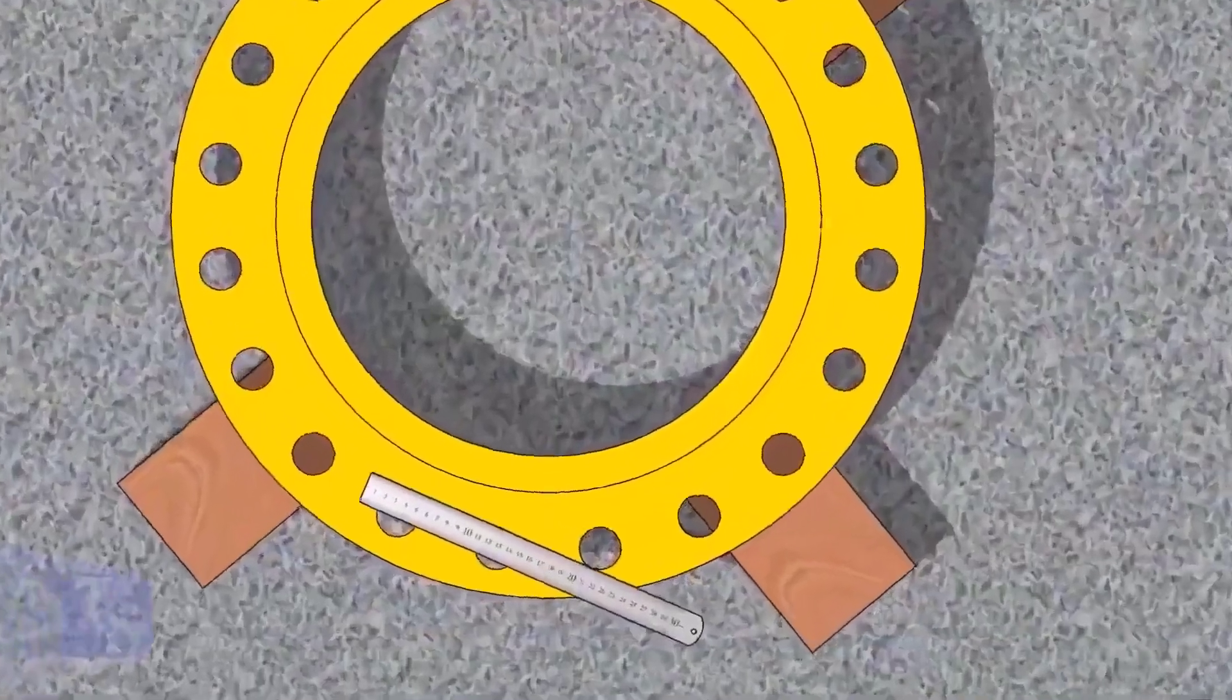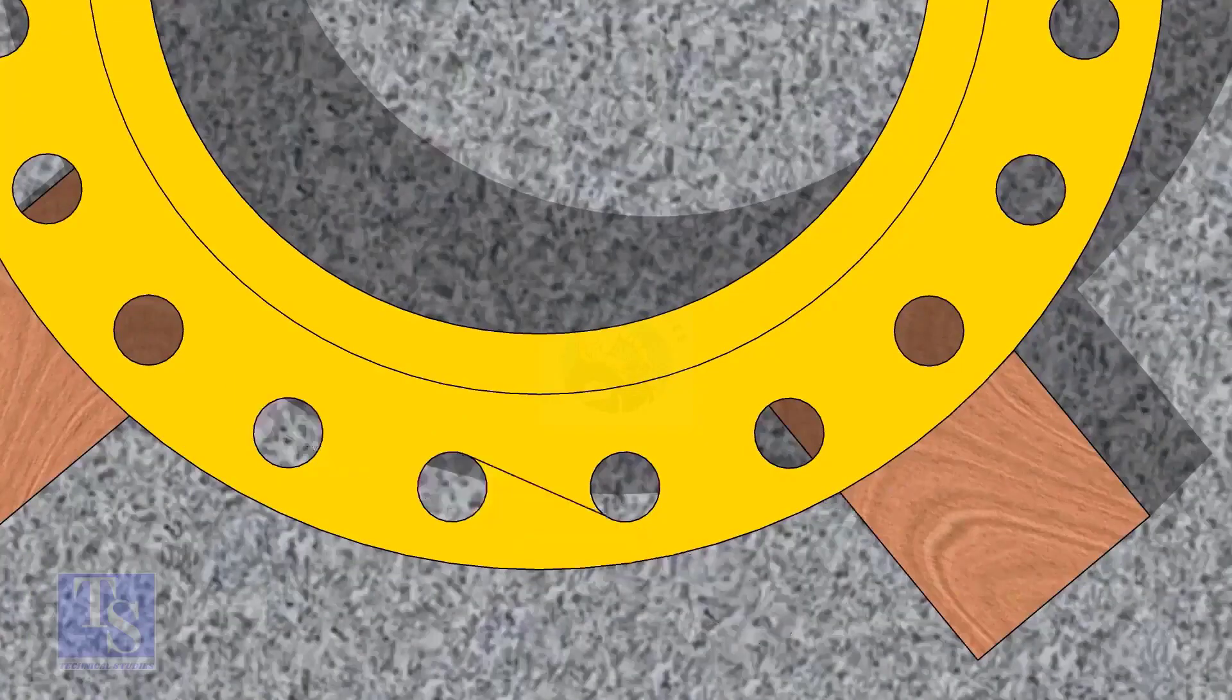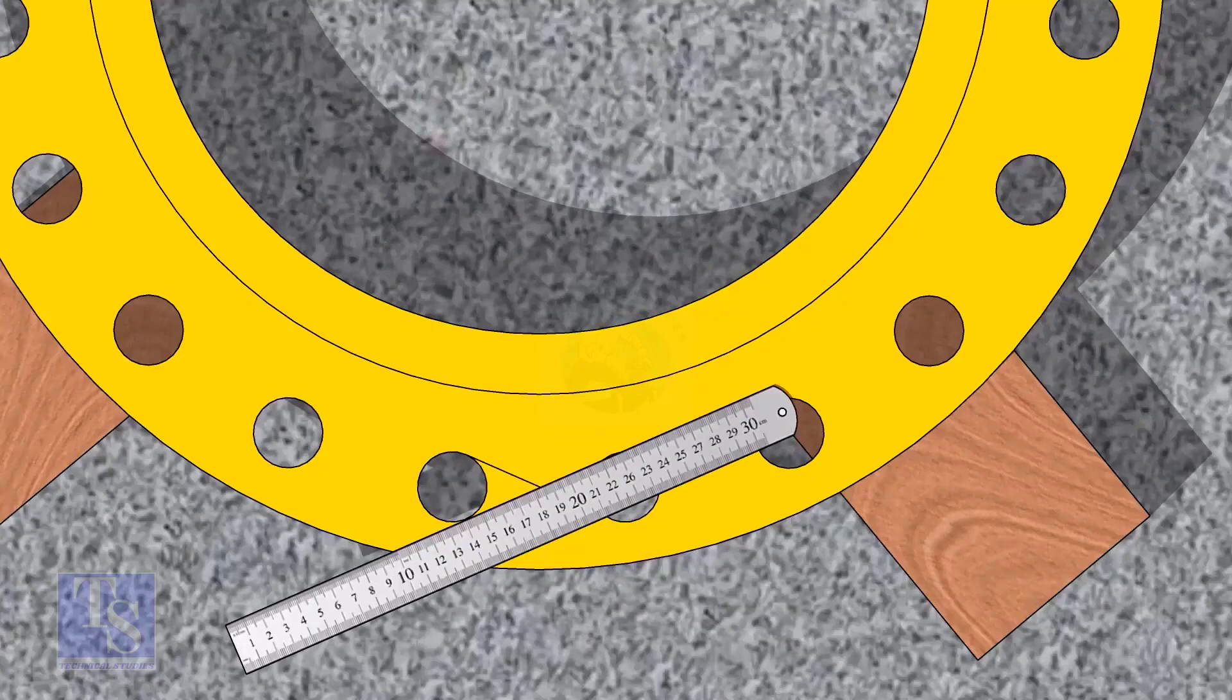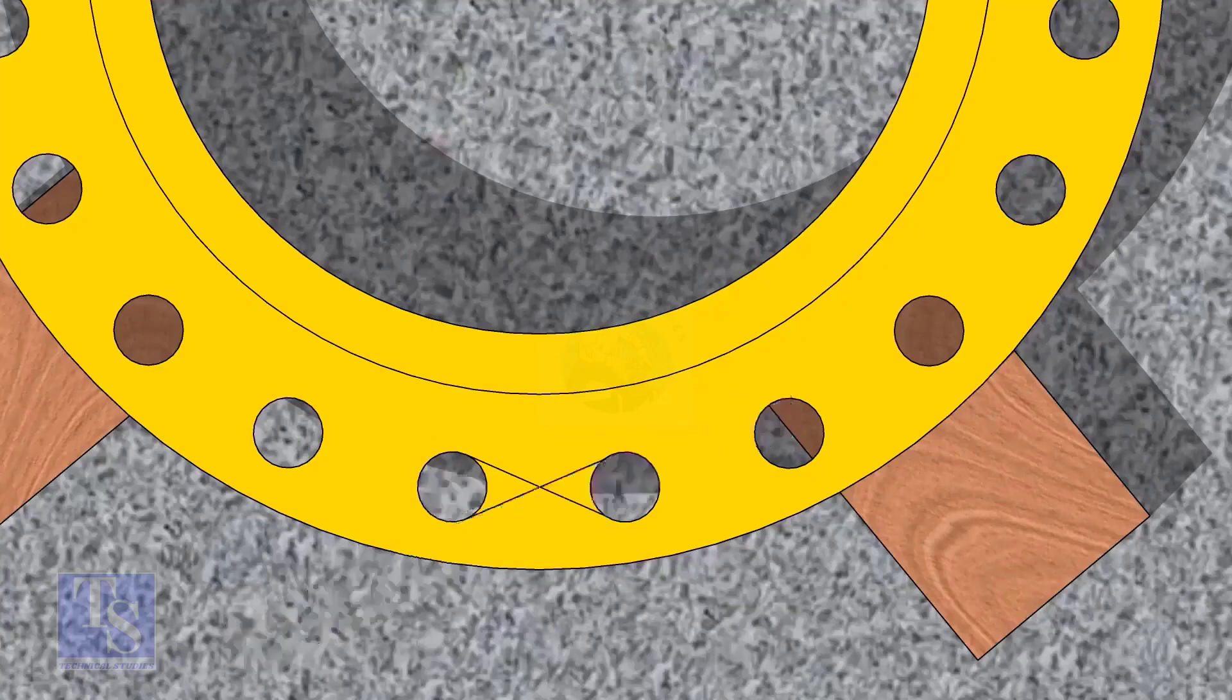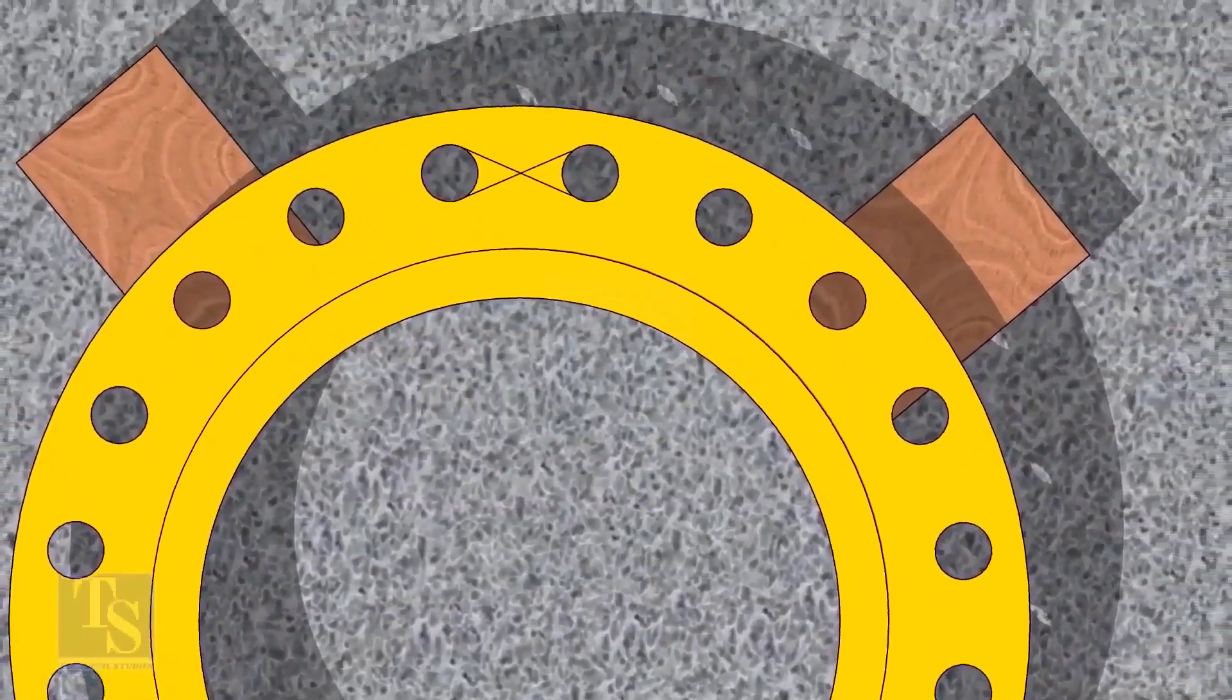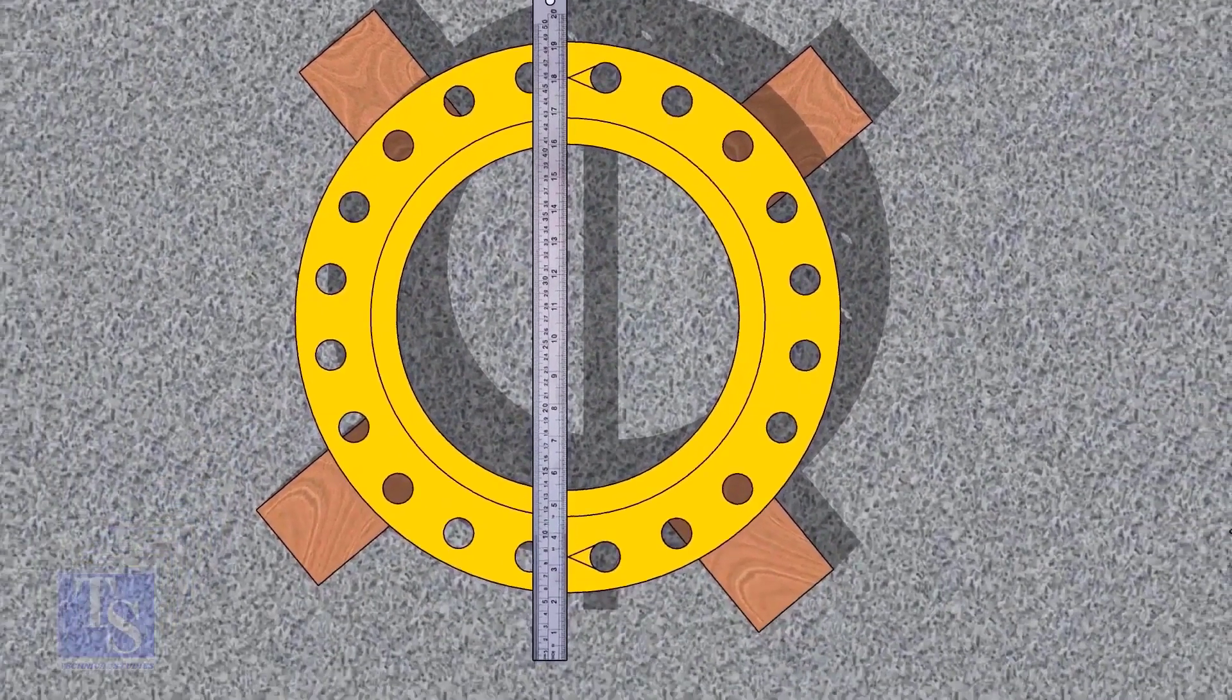Let us mark the center line of the flange. Draw tangential lines of two adjacent holes. The intersection of the lines is the center of these holes. Draw the center of the two holes on the opposite side.